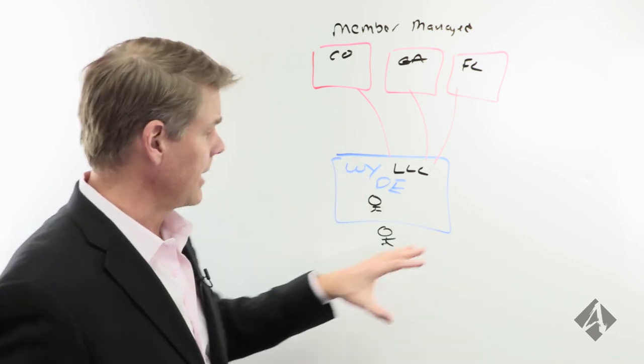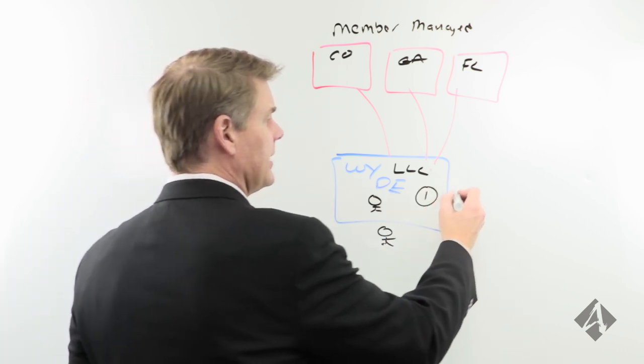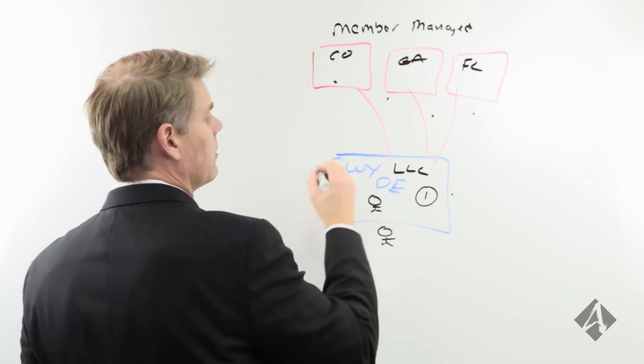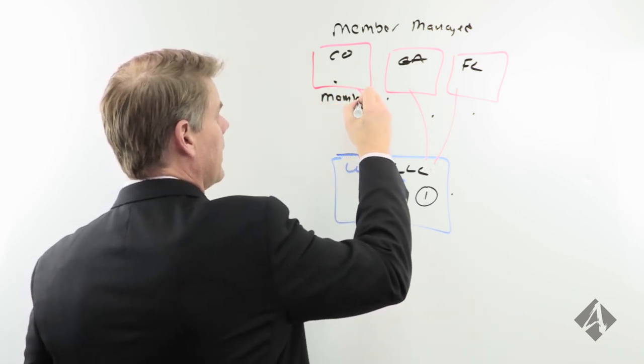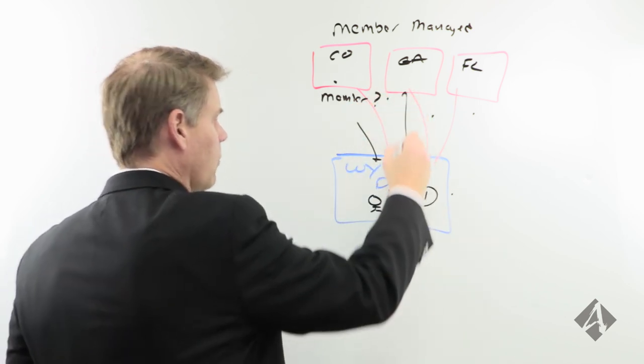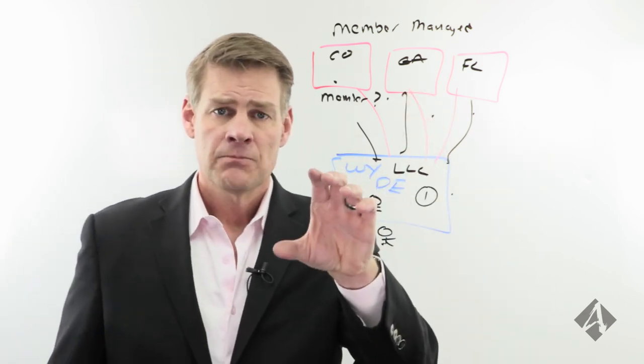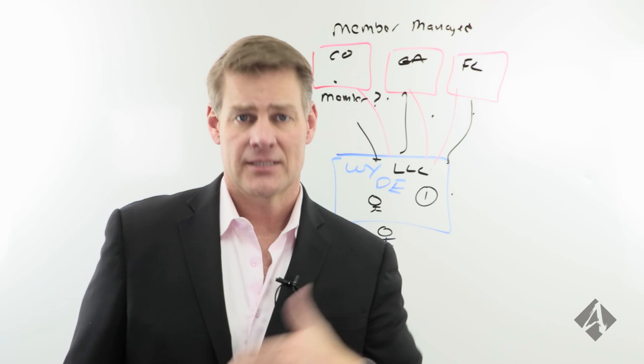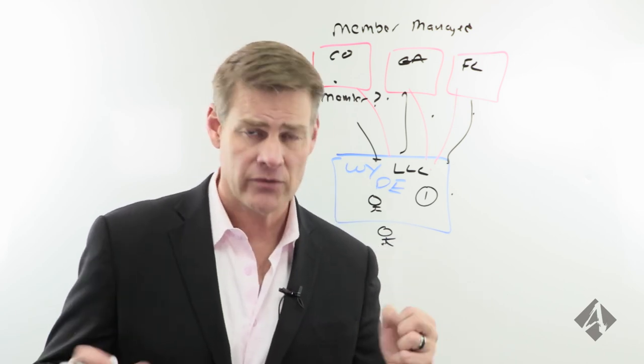So if you set them up as member-managed, then you have to list who the members are. Now, if I'm creating this type of structure, this is the first entity I create, and it's going to be the sole member of all of these LLCs. So who is the member when I file this entity? I'm going to tell them that Wyoming LLC, and I'll put its name up there. So nothing traces back to Clint. That's how we create these structures. That's the review.